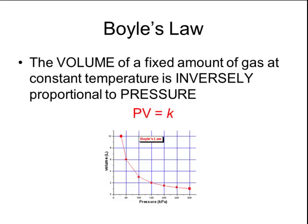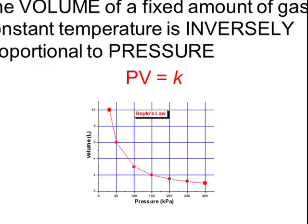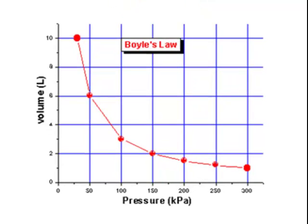When we graph relationships that are inversely proportional, they produce a hyperbola, as shown in the graph below. Again, notice the relationship. As the pressure across the bottom of the graph gets larger, the volume on the y-axis gets smaller.